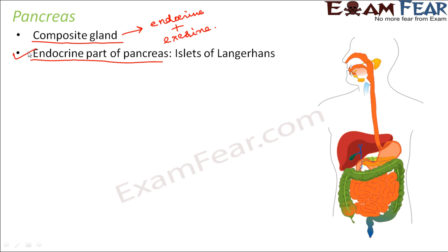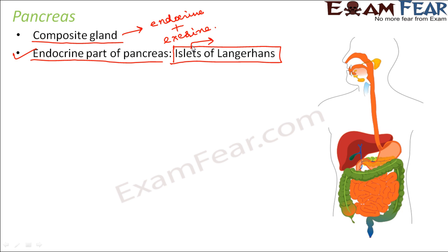The endocrine part of the pancreas is called the islet of Langerhans. Islet basically means a cluster of cells — it is like a bunch of cells, and each islet has 3,000 to 4,000 cells. These islets are irregularly distributed patches of endocrine tissue located within the pancreas.